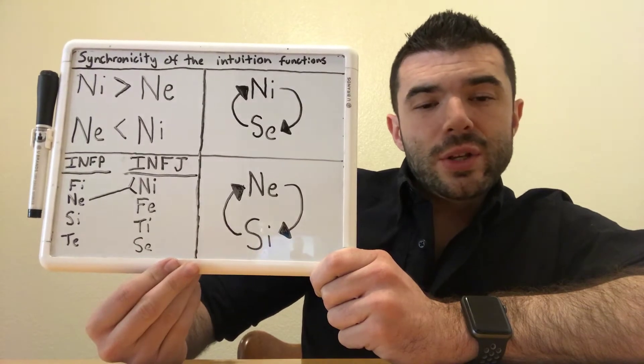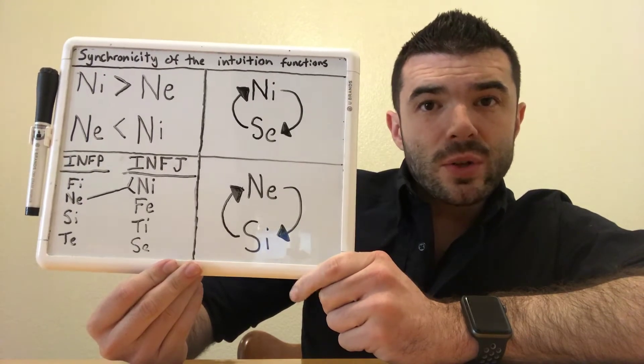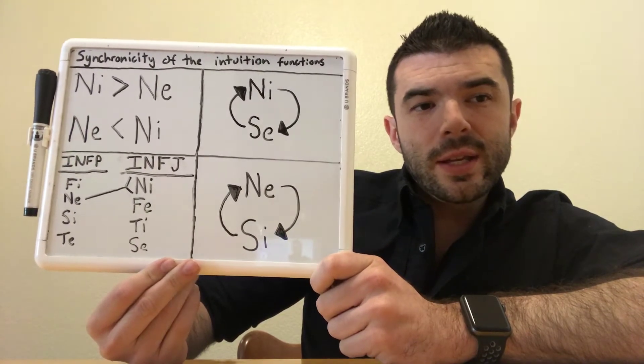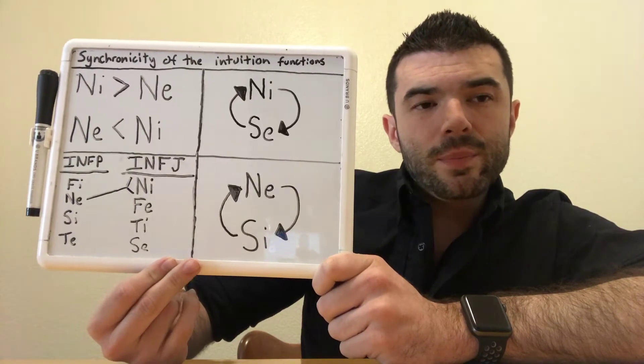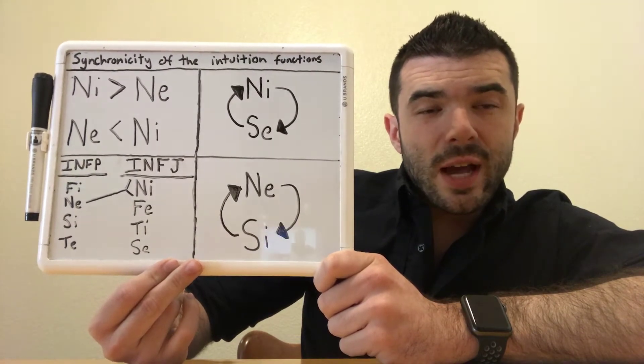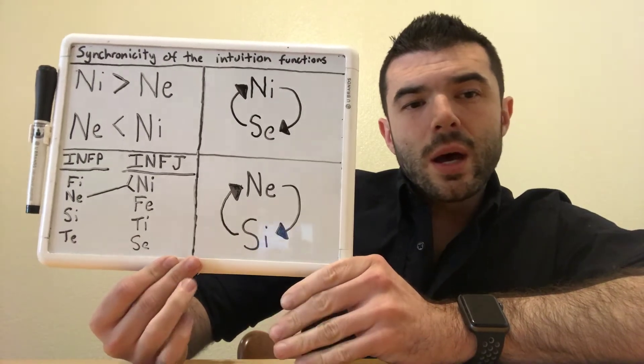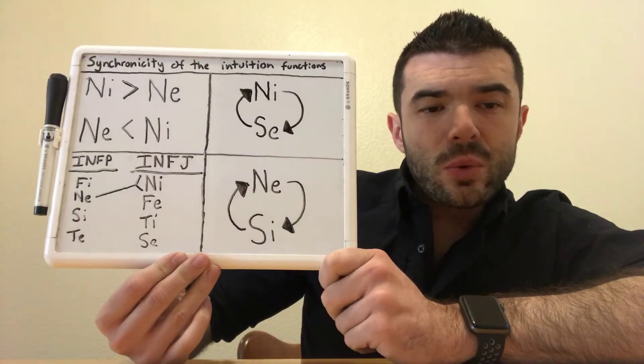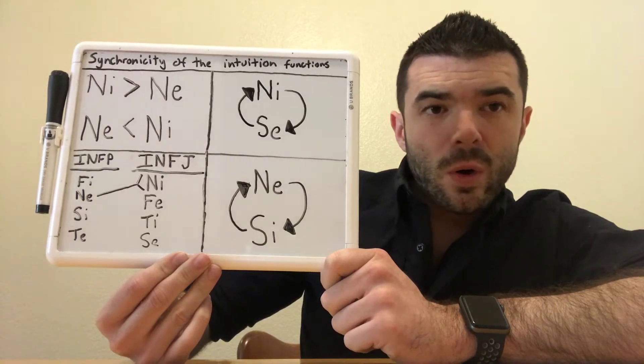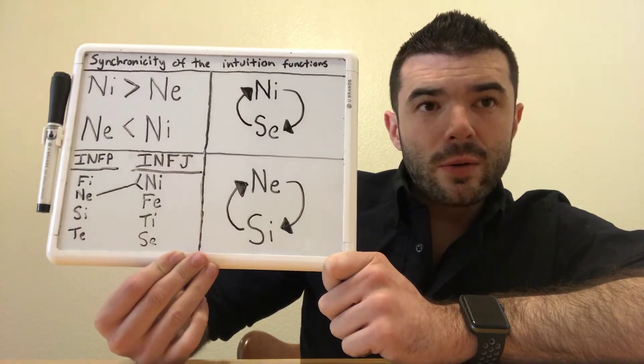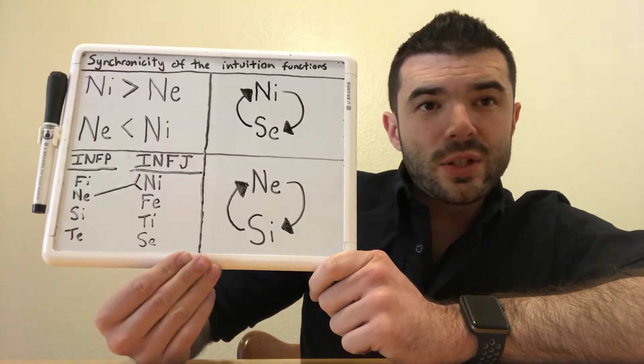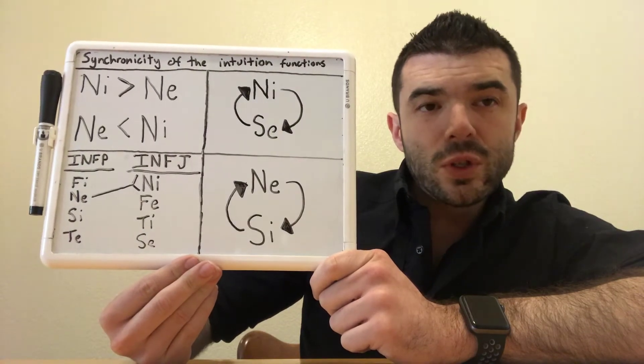So remember, introverted intuition is the personal unconscious. It is the function where you know what you want, what you desire. It's your willpower, your will. You know where you're going, what you want to do, your own personal future. You're aware of your own future, not necessarily other people's futures, but your future.